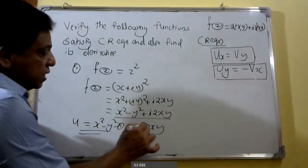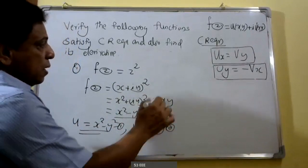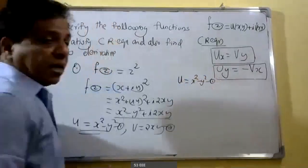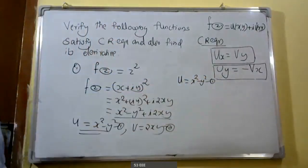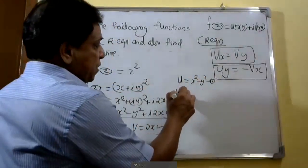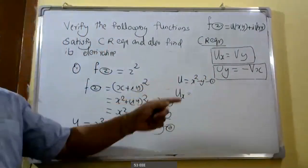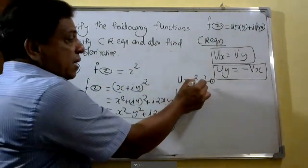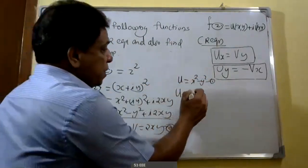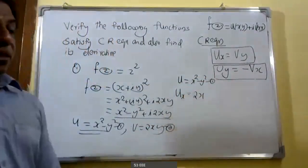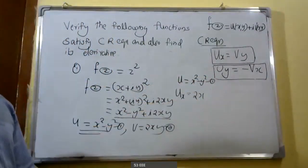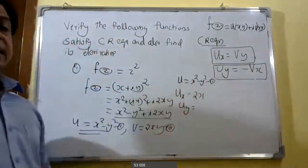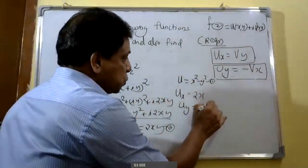This is equation 1: u equals x square minus y square. Differentiating partially with respect to x, we get u_x. The y term is constant, therefore we get u_x equals 2x. Again, differentiating equation 1 with respect to y, we get u_y. In this case, x is treated as constant, so the value will be minus 2y.